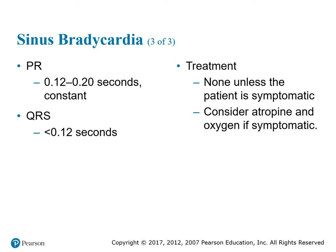Your PR interval is still anywhere between 0.12 to 0.20 seconds, which is consistent — you can take it from the beginning, the middle, or the end and it will still be the same. Your QRS is anything less than or equal to 0.12 seconds. There is no known treatment for asymptomatic patients. They may consider atropine and oxygen if the patient is symptomatic.